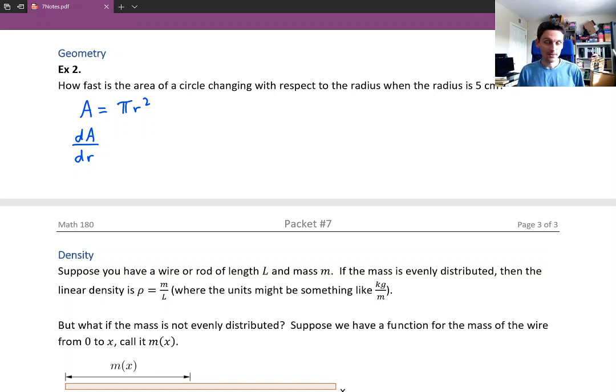So if we want to figure out how this area function is changing as the radius changes, that is the derivative and we can represent this as dA/dr. Just like we wrote dy/dx for the rate at which y is changing with respect to x, here in this specific case we can write dA over dr to represent how fast area is changing with respect to radius.